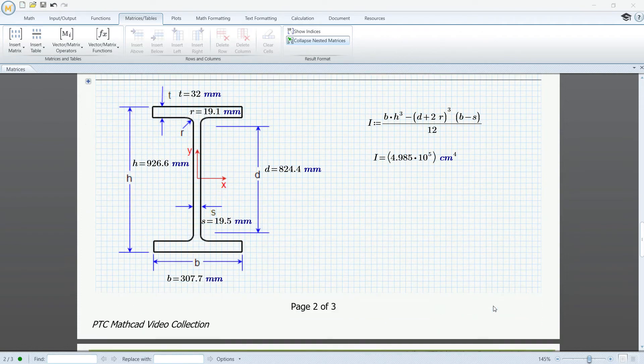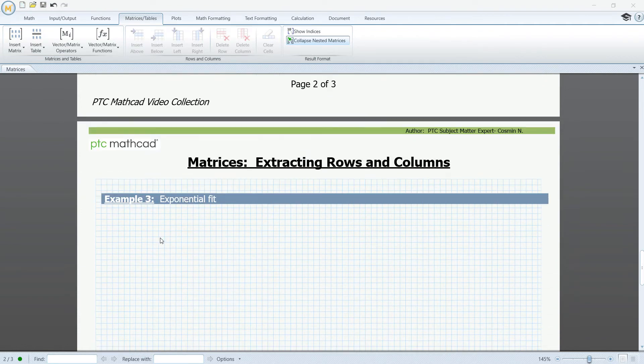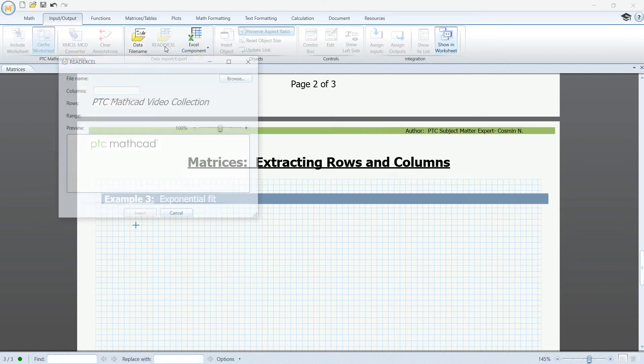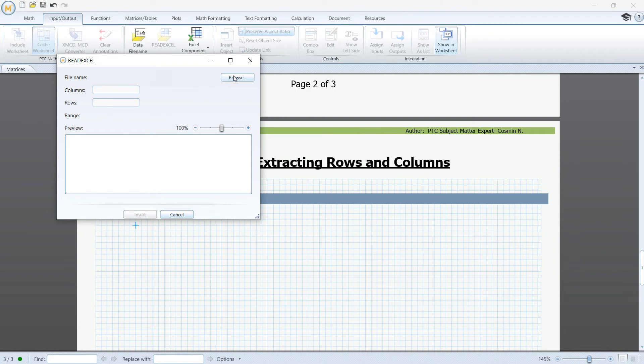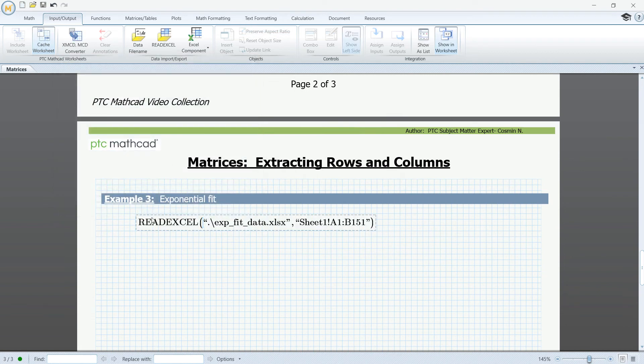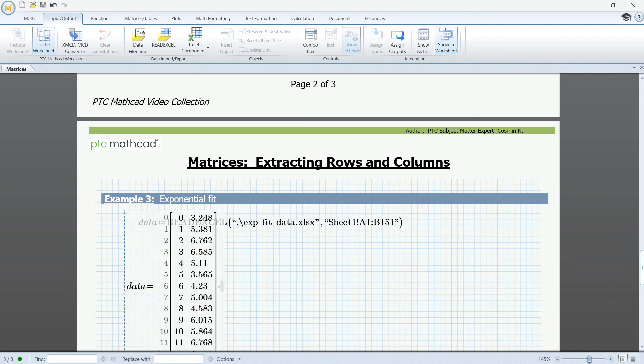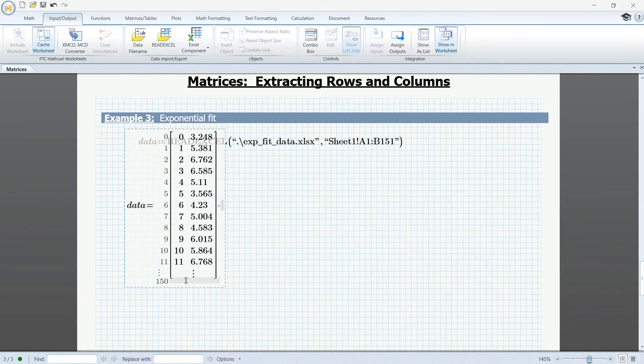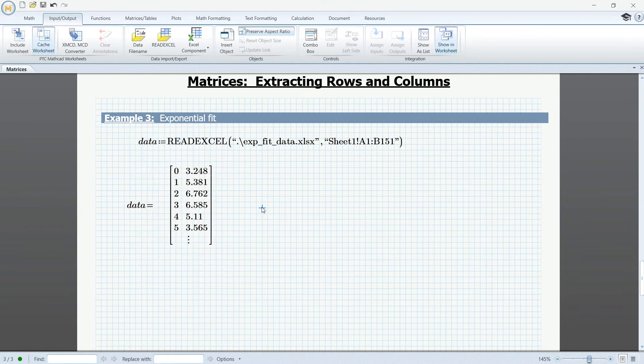For the third example, we are going to do some data fitting using one of Mathcad's built-in function. But, first, we need to import some data so we can have something to work with. To do that, we go to the Inputs and Outputs tab and we hit the Read Excel function. We browse to our Excel file and we hit Insert. Now, we assign this data to a variable and if we evaluate this variable, we can see that the data has been imported and has been passed into an array of points.